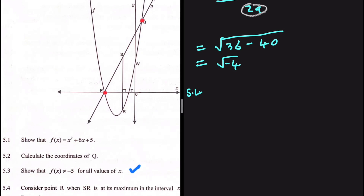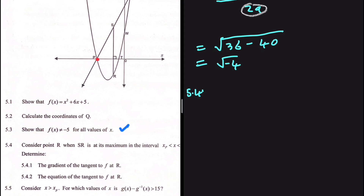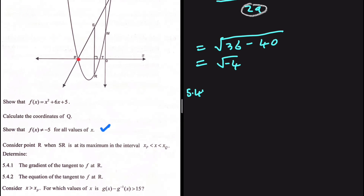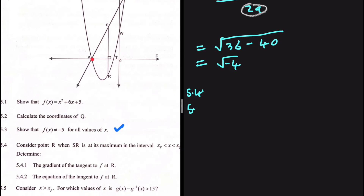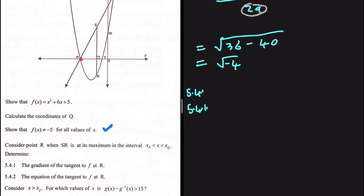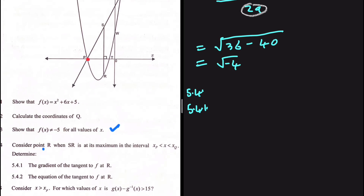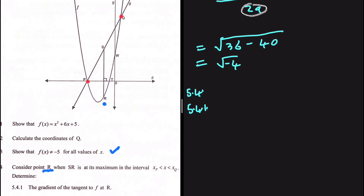For 5.4: consider point r when sr is at its maximum in the interval between x at p and x at q. We need to find the gradient of the tangent to f at r. Point r is where the vertical distance sr between the two graphs is greatest. We can find an equation for the distance between the two graphs.